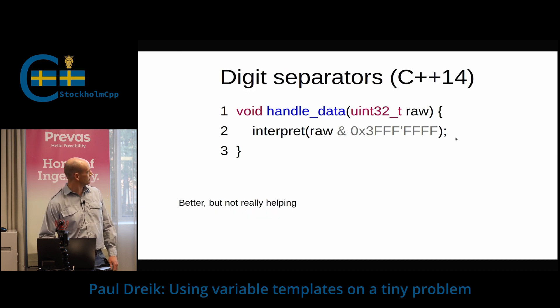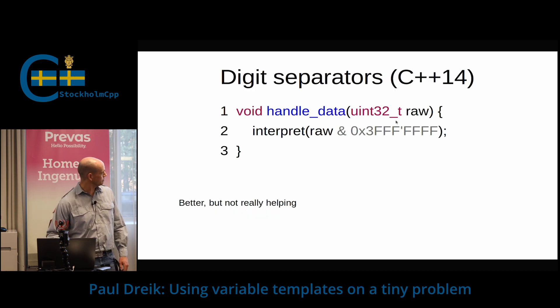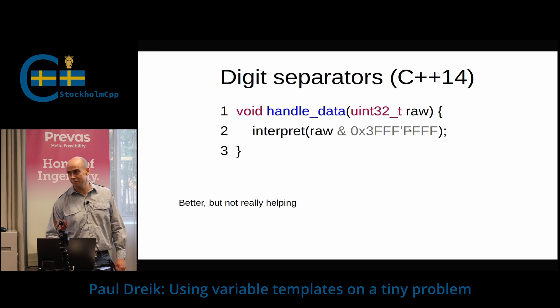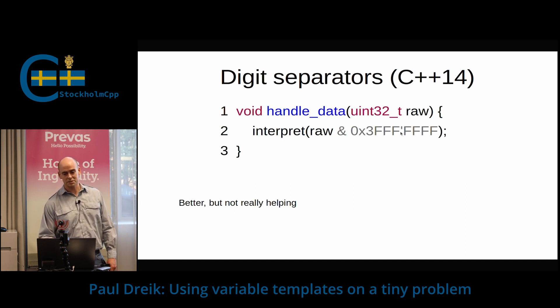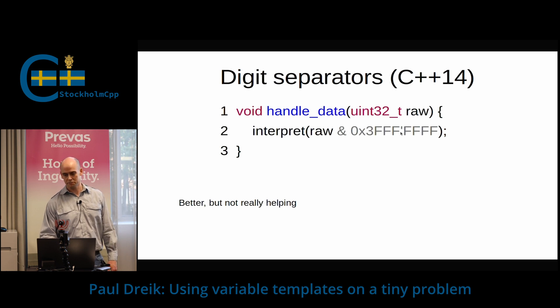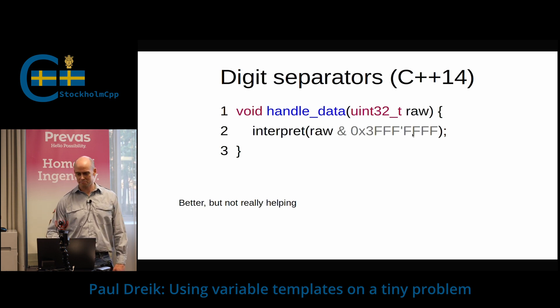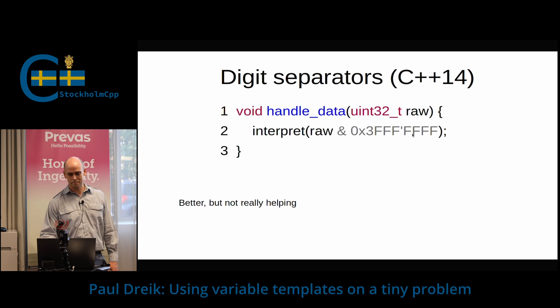The first thing — I don't know if you saw that — but here is the apostrophe. This is from C++14, a digit separator. So this makes it a bit better, but not much.